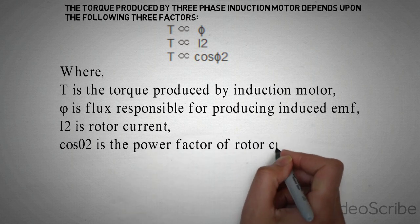So by combining all these 3 quantities we can easily get T is directly proportional to Phi, I2, and Cos Phi2.